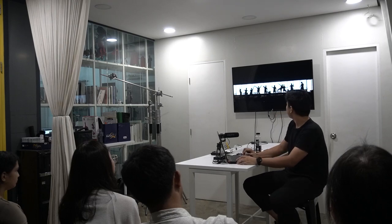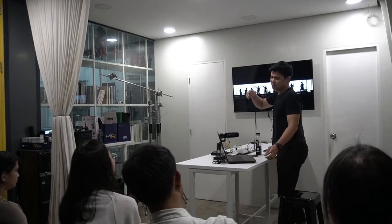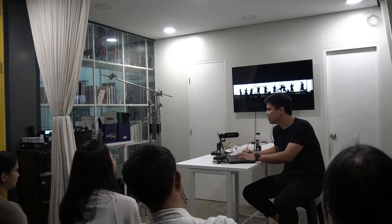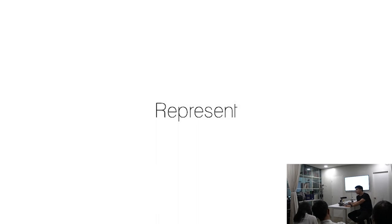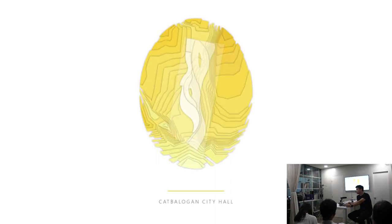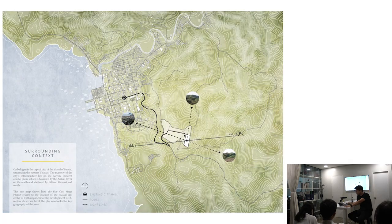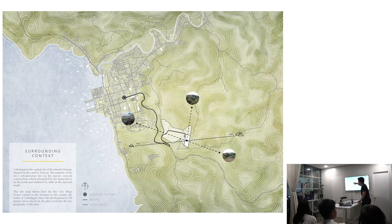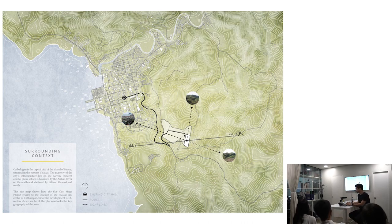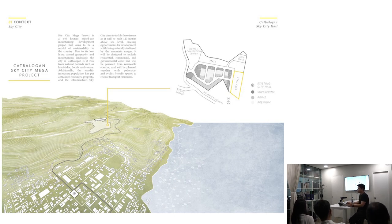Another journey in social architecture: representing your community. This is the Catbalogan City Hall project, currently under construction. Catbalogan is a small city that gets flooded every time it rains — it's basically a catch basin for rainwater. The city has started developing a plan; the Sky City Complex includes a portion donated for the new city hall.